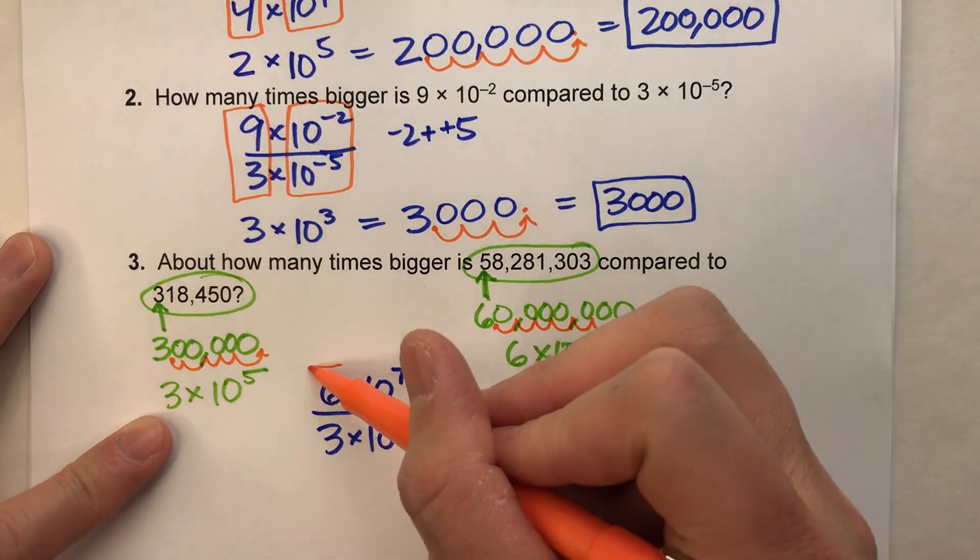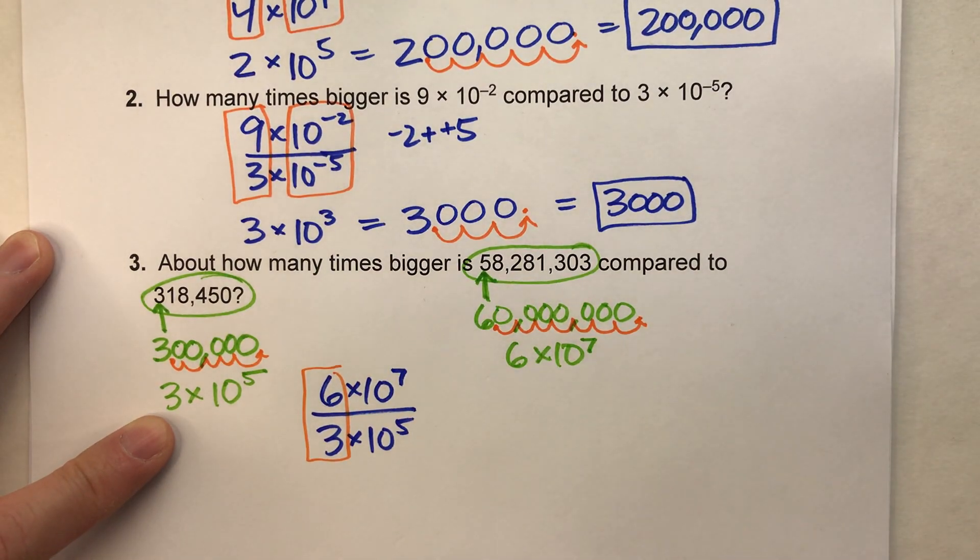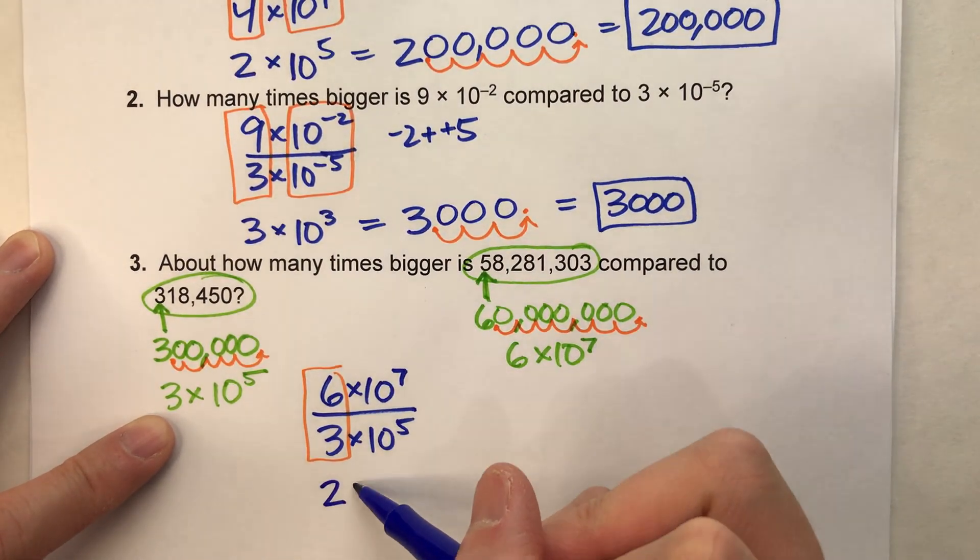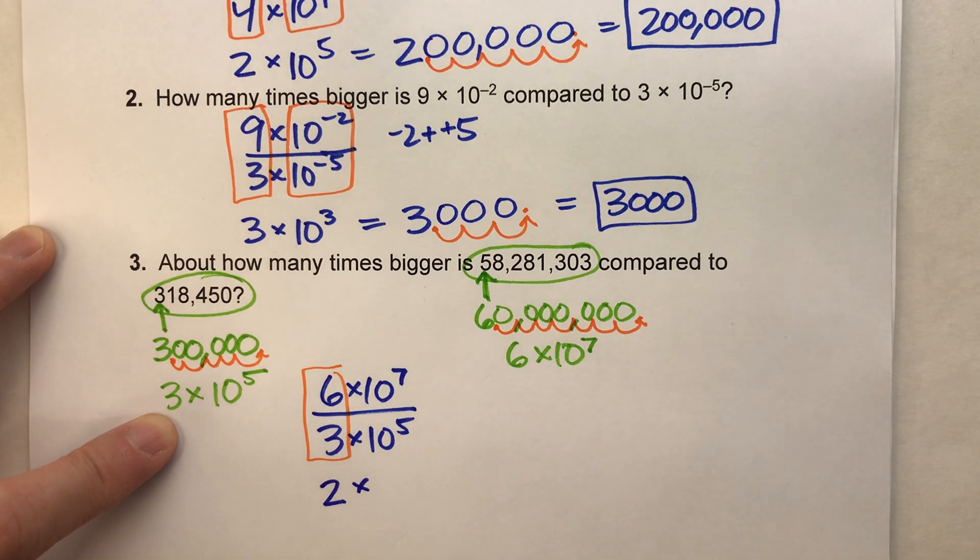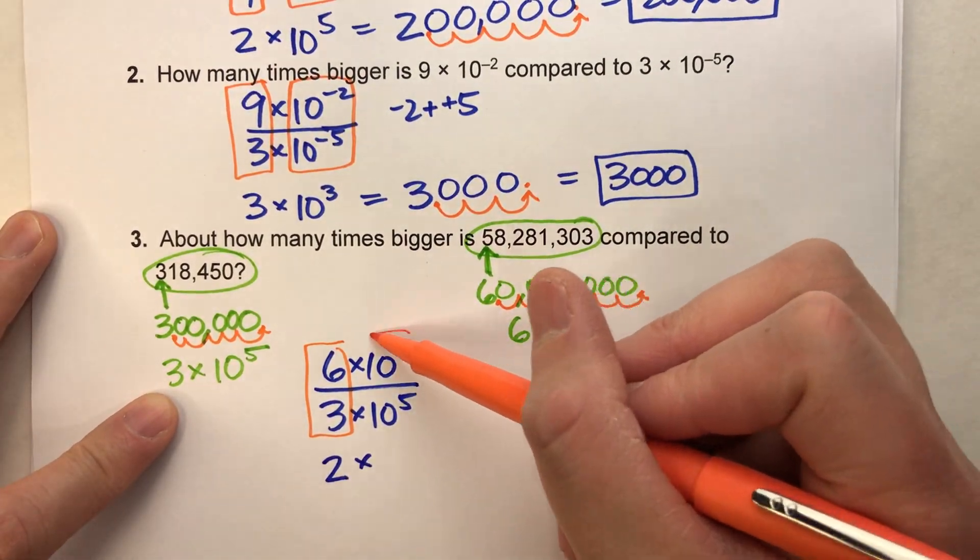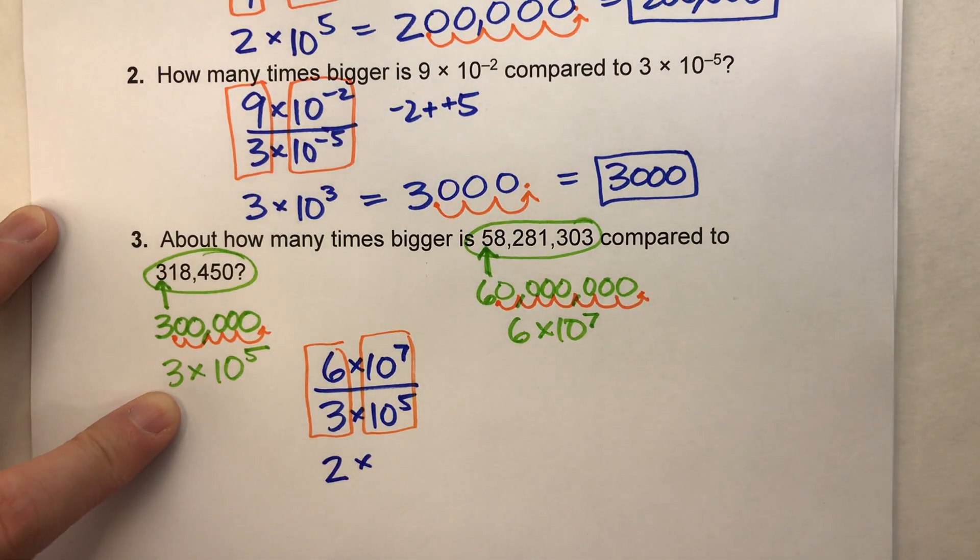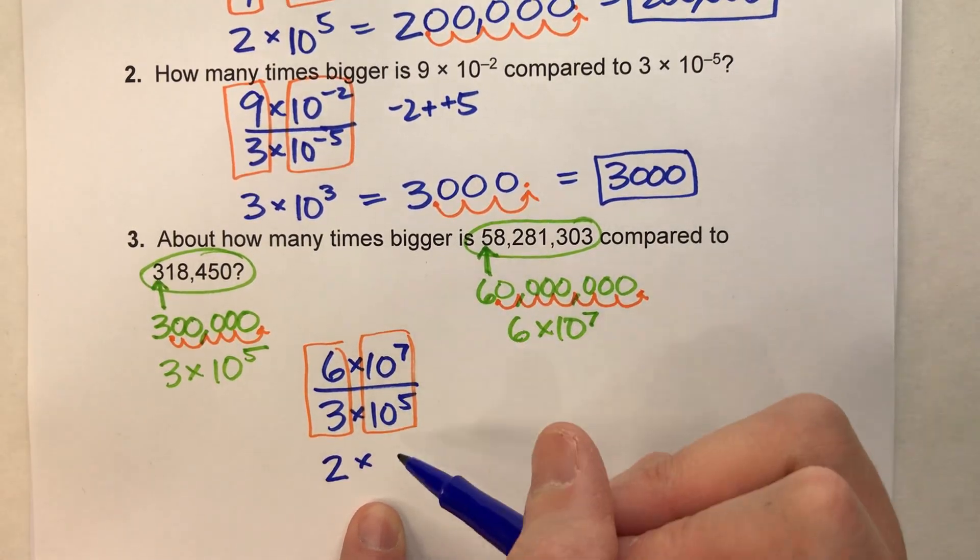Let's do this. Divide the regular numbers, six divided by three is two times. Now let's divide the powers, 10 to the seventh divided by 10 to the fifth. Rule for dividing powers, we keep the base, subtract the exponent.